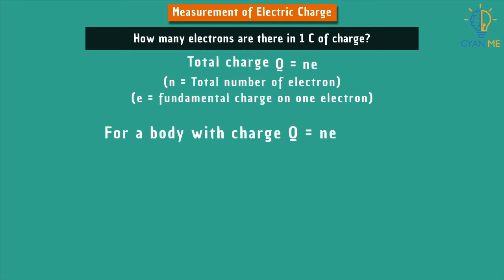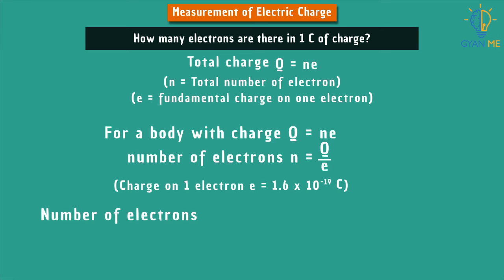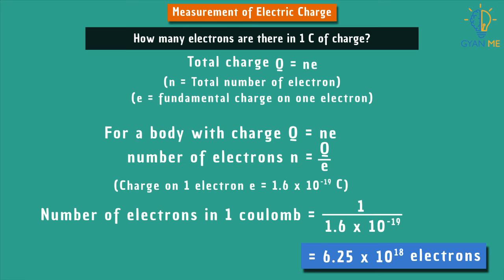By rearranging this formula, we get the number of electrons, that is n = Q/e. Now we know that charge on one electron is equal to 1.6 × 10^-19 coulomb. Therefore, the number of electrons in one coulomb is equal to 1/(1.6 × 10^-19), which gives us the value 6.25 × 10^18 electrons.